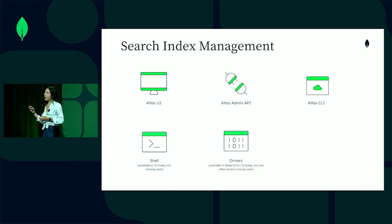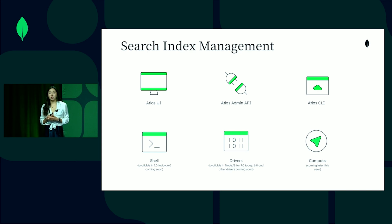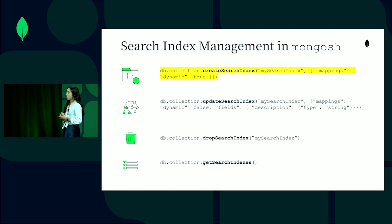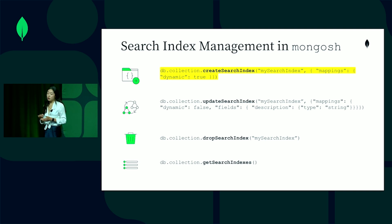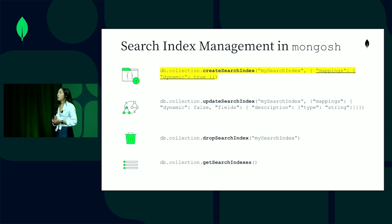Starting today with Mongo shell and the Node.js driver, I'm using my search index and passing in a search index definition in JSON. This is just the default definition for those who aren't familiar, where dynamic is set to true — that means all the fields in all my documents are going to be indexed.